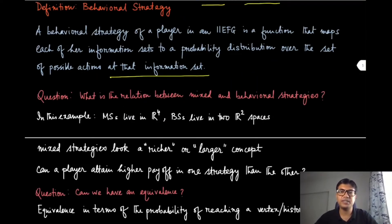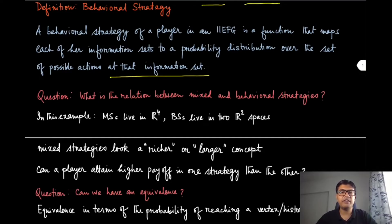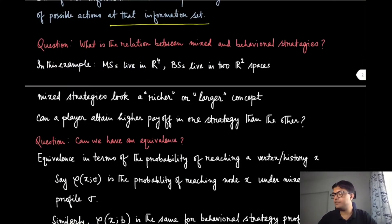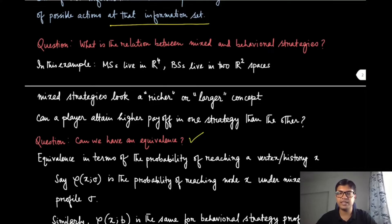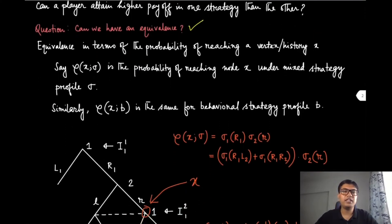The difference between behavioral and traditional mixed strategies is that we go one information set at a time and randomize at the information set level. One observation: mixed strategies live in a higher dimensional space — R^4 here, since there are four pure strategies — while behavioral strategies live in two separate two-dimensional spaces. So mixed strategies seem like a richer concept, but we'll see that's not completely true for all games.